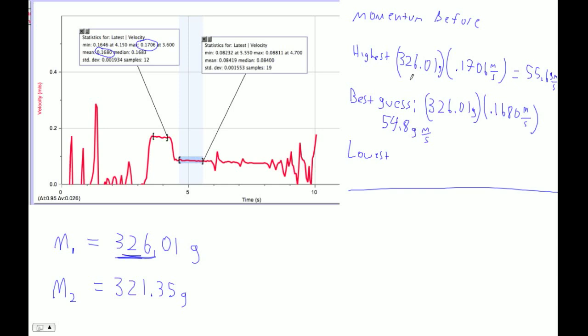And then the lowest it could have been. And the important reason why we're doing this range is because we want to see whether these momentums could be the same before and after. OK, so the lowest it could have been before is, I'm going to use the minimum here. Like that. So that's going to be 326.01 times .1646. And that's grams. That's meters per second. So that's going to be .1646. 53.7 is what I'll say. It's 53.66 or something. And that's gram meters per second. So that is the momentum before fell in some range between 55.6 and 53.7.